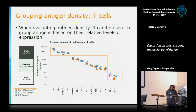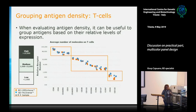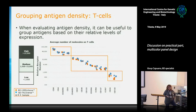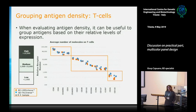Some data from the Antigen Density Project are already available in a BD brochure, and further data will be accessible through the BD panel design tool on their website. The current version of the panel design tool still requires the user to input the level of antigen density and the gating strategy — it is not yet fully automated. It is not yet clear whether the project covers mouse antigens as well.